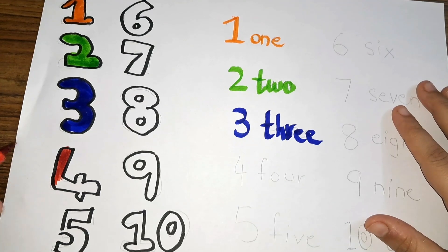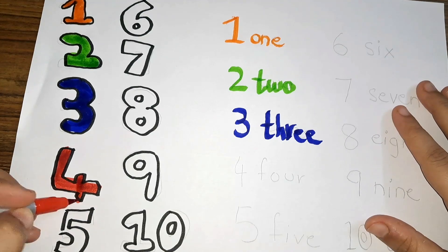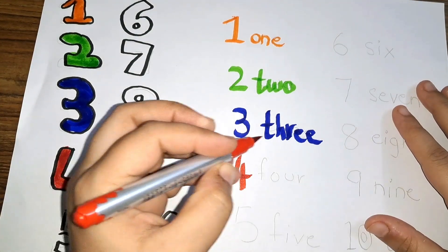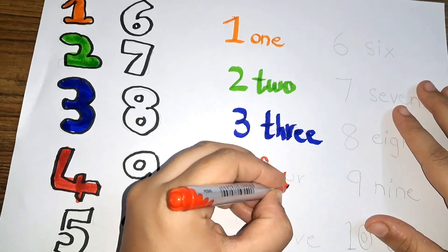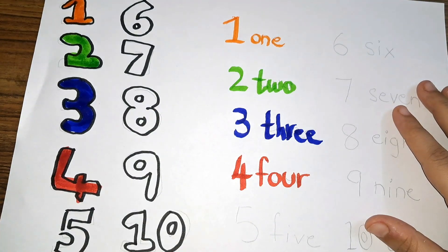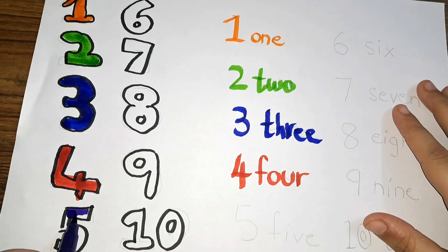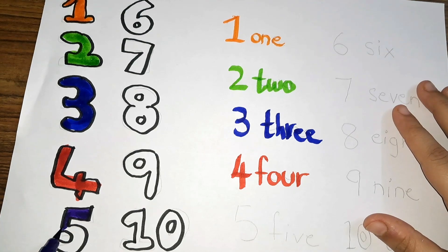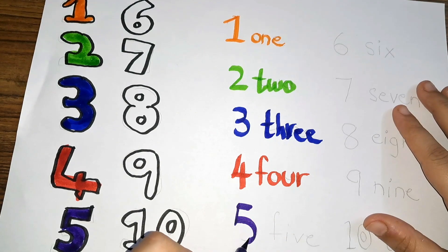Next, what comes after three? Four. You will color it with red color. This is red color. Number four — F-O-U-R, four.